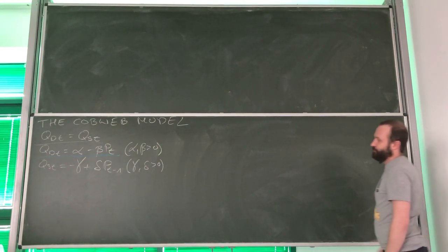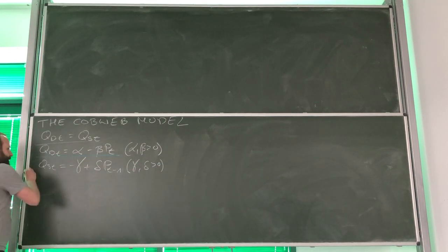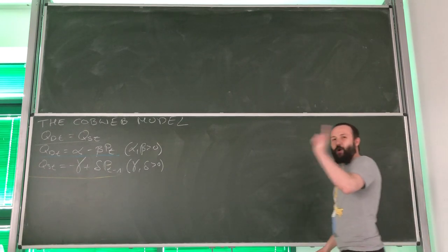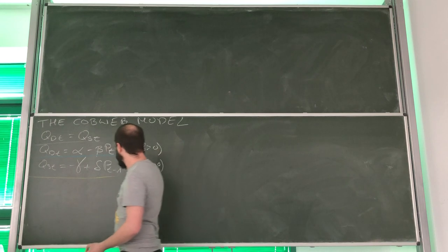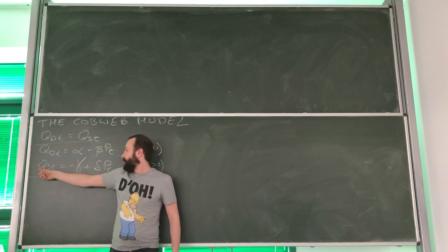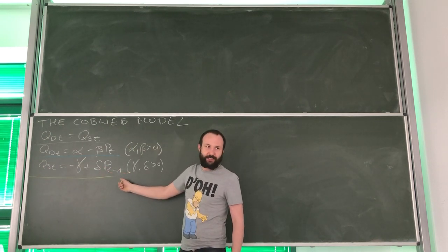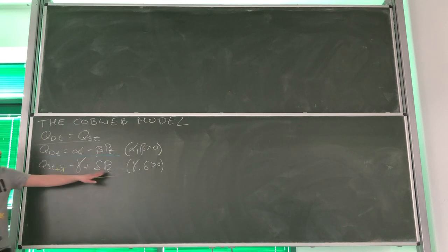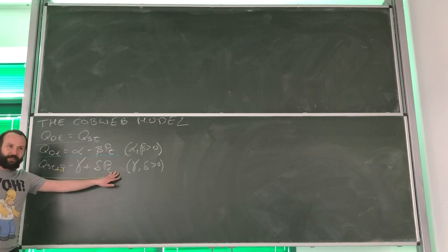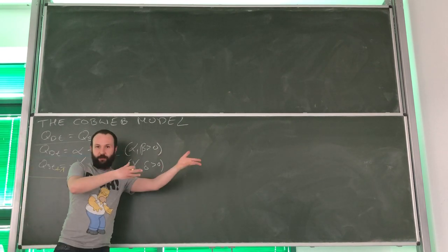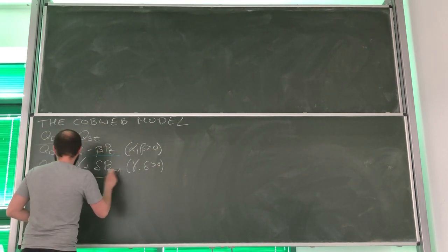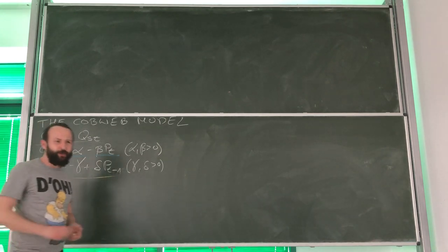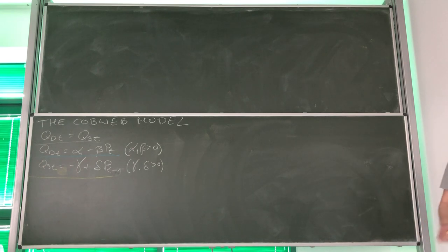Then the third equation is the supply equation, and this is the specific situation I've been telling you about. Because it takes one period to produce potatoes, we base our decision about the supply of potatoes on last period's price. Based on the price today, the company decides how many potatoes to produce one period — let's say one year — from now. Those two formulations are actually equivalent; we will use a trick associated with moving the subscript.